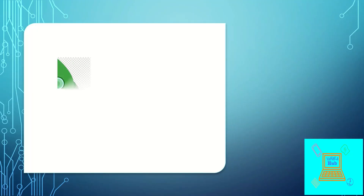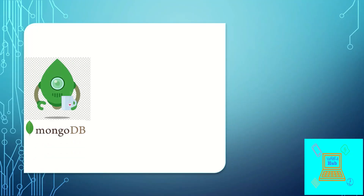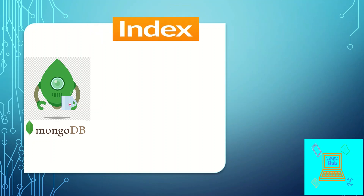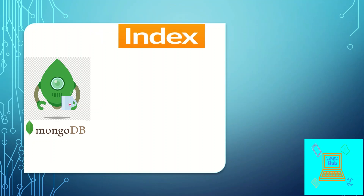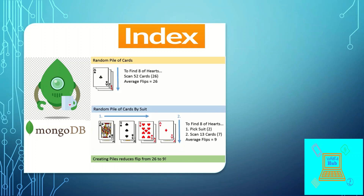Welcome to my channel. This video is regarding MongoDB indexes. Indexes are an important factor for any database system because they help in retrieving query data in a fast and efficient manner. What indexes basically do is reduce the response time for a read operation, although during write operations they are an overhead for the database because it has to update the index along with the data.